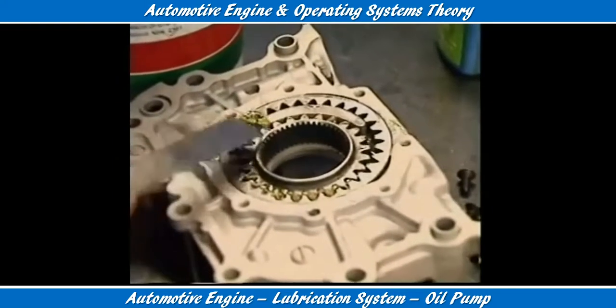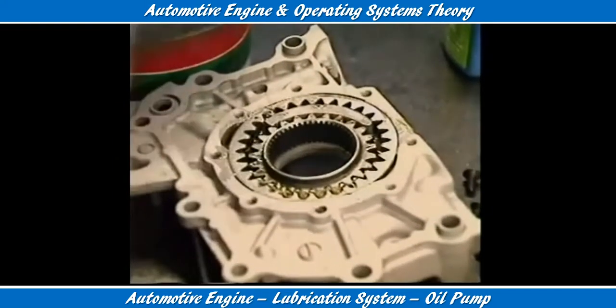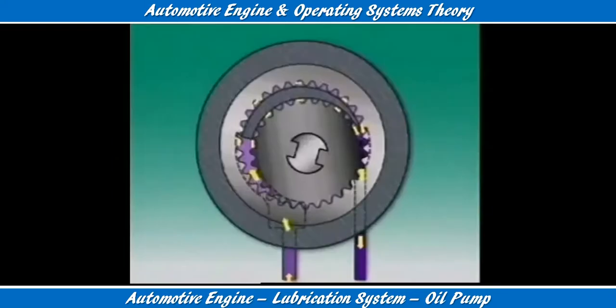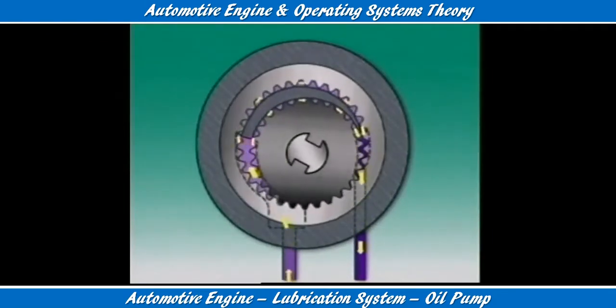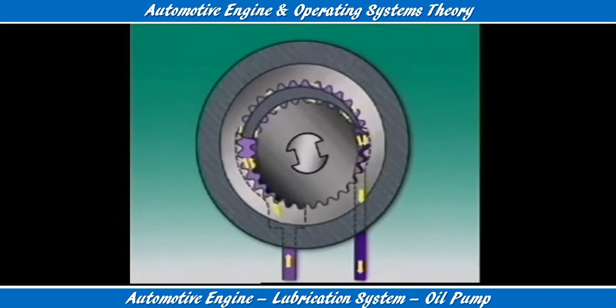The crescent pump uses a similar principle. It is mounted on the front of the cylinder block. The inner gear is on the end of the crankshaft, which then drives the pump directly.